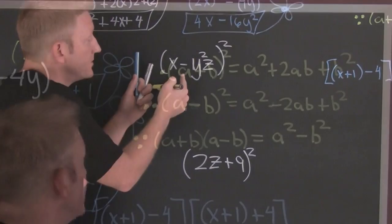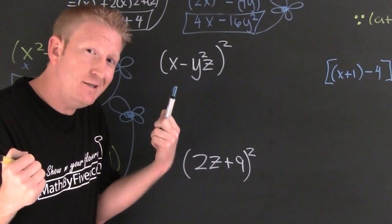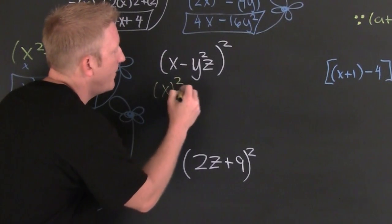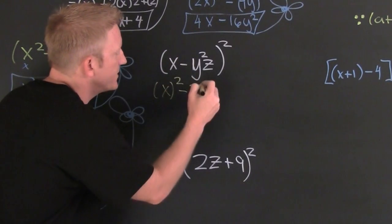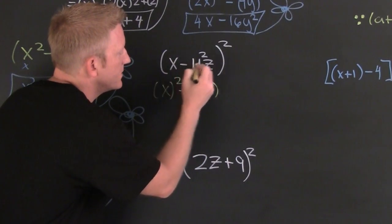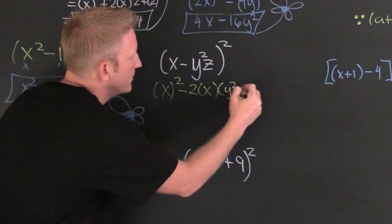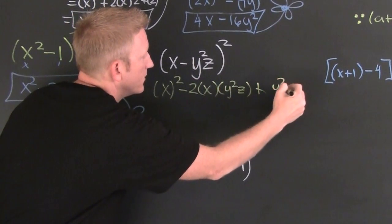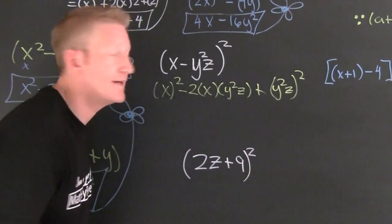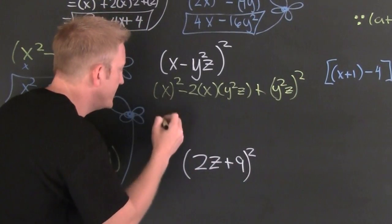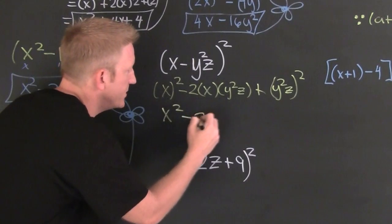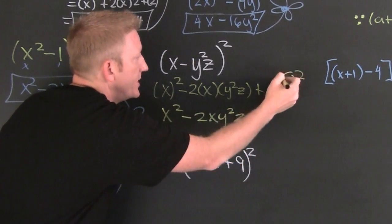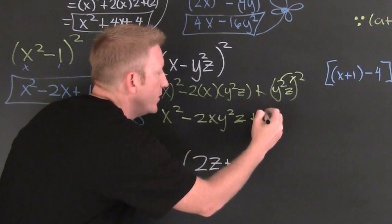Which one is this? It's screaming perfect square. It's this one squared, minus two times this one, times that one, plus this one squared. Finish it: this is x squared minus 2xyz squared, plus the last term. Power raised to a power, you multiply.